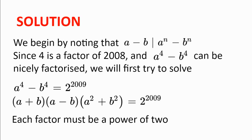Solution. We'll begin by noting that a minus b is a factor of a to the power of n minus b to the power of n. This encourages us to think about factors, and rather than using x to the power of 2008 minus y to the power of 2008, we can begin by observing some smaller powers — for example, 4, since 4 is a factor of 2008 and a to the power of 4 minus b to the power of 4 can be nicely factorized.